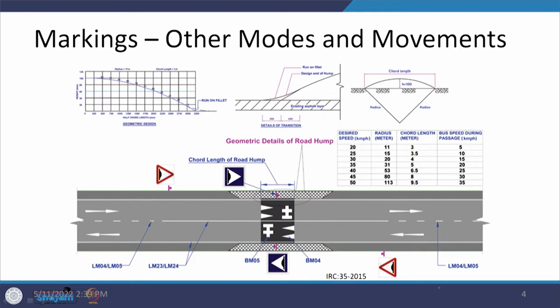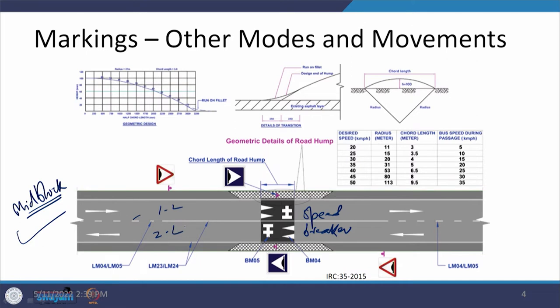Let us start with markings related to modes and various movements. Looking at this slide, there is a mid-block section with a speed breaker provided. On this stretch there is a center line marking because it is a two-lane system — one lane on each side, so two-way traffic is moving. When approaching this speed breaker, the line becomes continuous instead of broken, telling the driver to maintain lane discipline and not overlap into the adjacent lane in this reach.